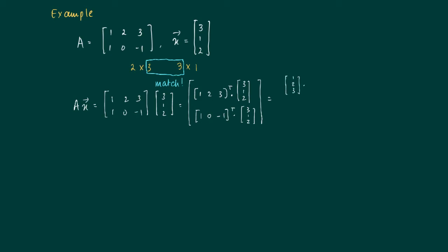So the first coordinate we get the inner product of 1, 2, 3 with 3, 1, 2 and the inner product 1, 0, minus 1 with 3, 1, 2.